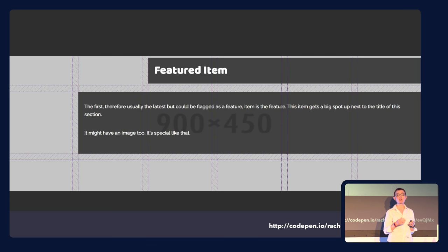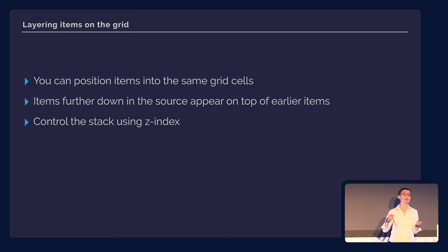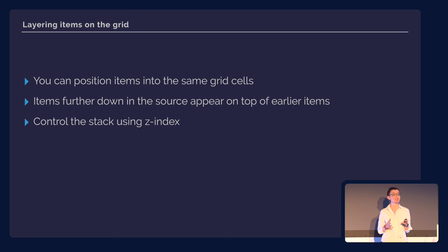Tracks in the implicit grid will be auto-sized — they grow to contain their content. You can set their size with grid-auto-rows and grid-auto-columns, but for row tracks you probably just want them to grow based on whatever you put in. This shows how grid can layer items: things lower in the source end up on top, and you can use z-index just like with absolute positioning to change the stack order.